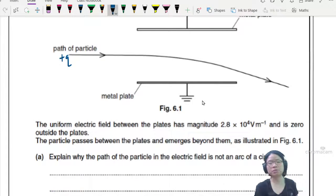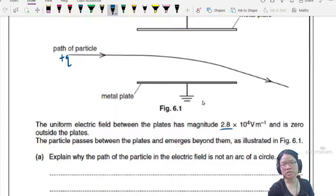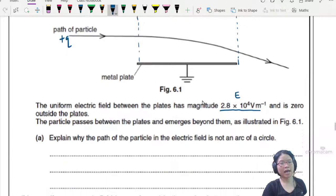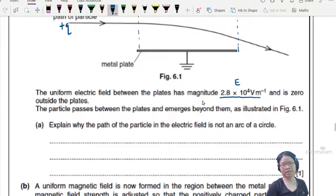The uniform electric field between the plates has magnitude 2.8 × 10^4 V/m and is zero outside the plate. So only in between got electric field, outside don't have. The particle passes between the plates and emerges beyond them.